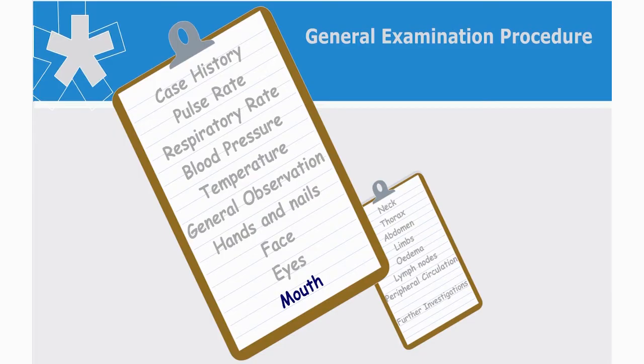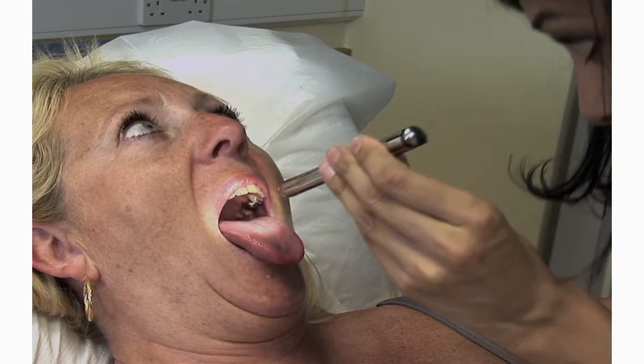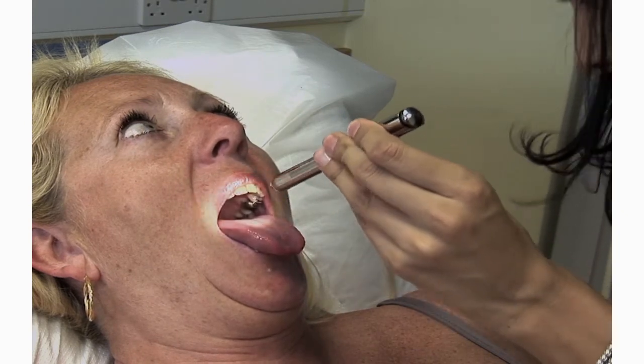How would you approach examination of the mouth? First, I would observe the patient's mouth closed, looking for angular stomatitis and the colour of the lips. Then with the mouth open, you can check the general dentition and signs of central cyanosis.